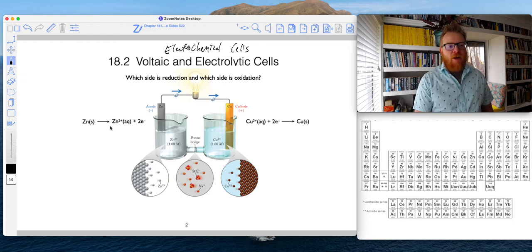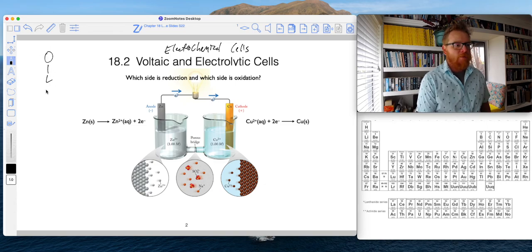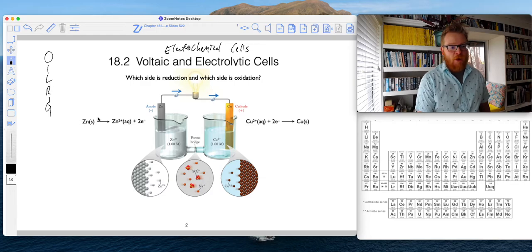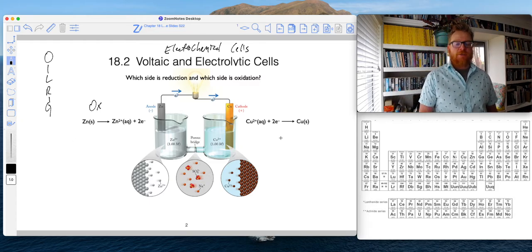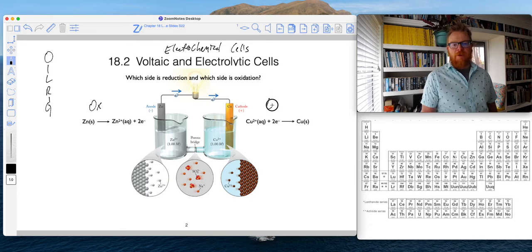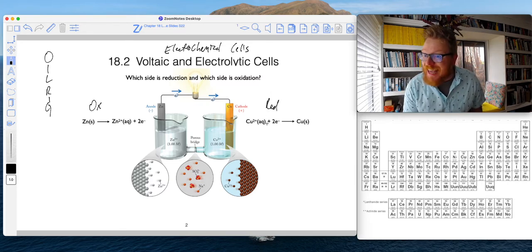In this anode half this particular reaction goes through, and we should think for a minute if this is oxidation or reduction. OIL RIG: oxidation is loss of electrons. When we look at this zinc reaction, this is our oxidation reaction because zinc is losing electrons. If we look at this half, this is our reduction half because the copper is gaining electrons.